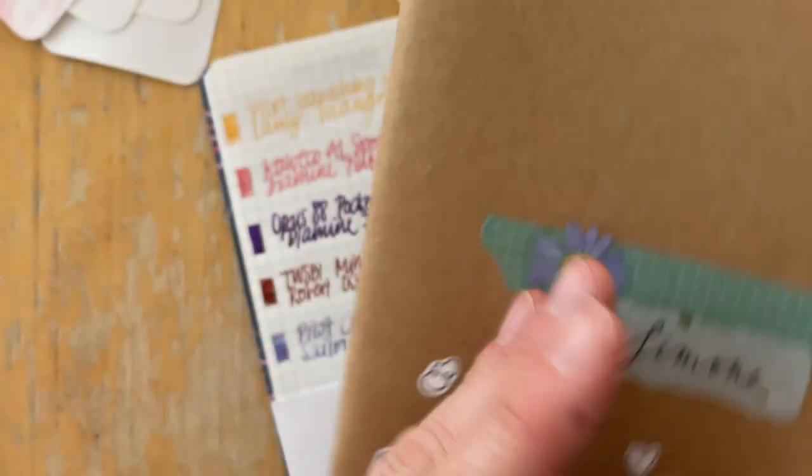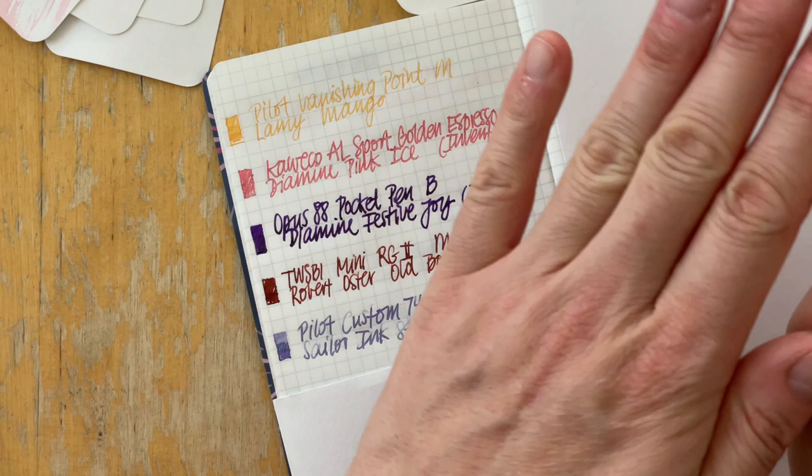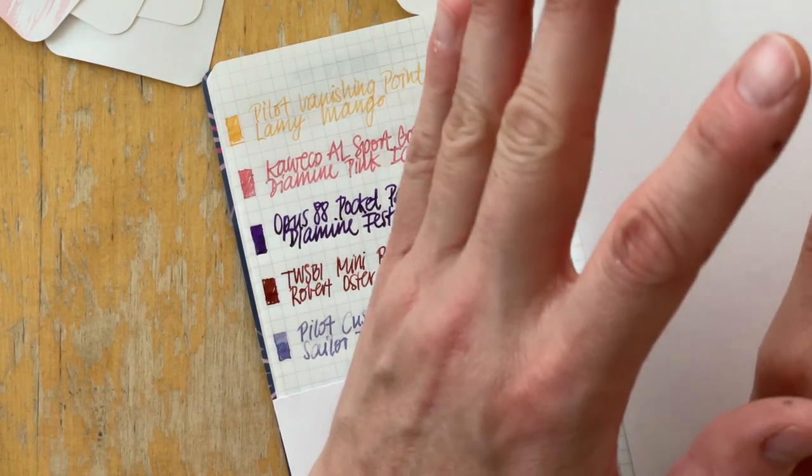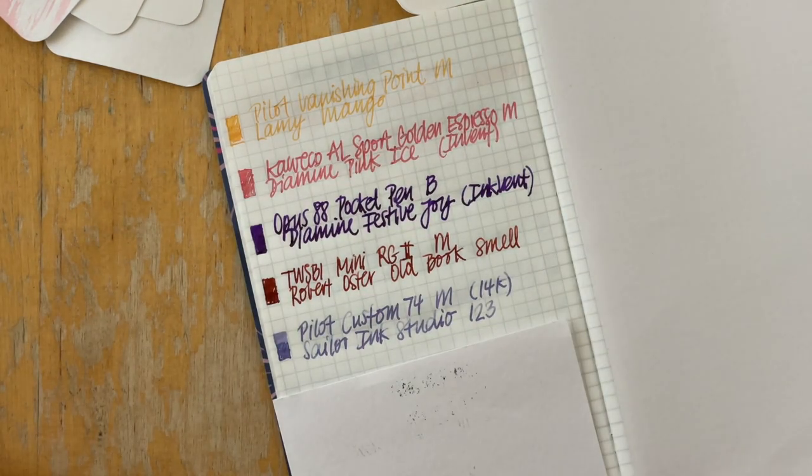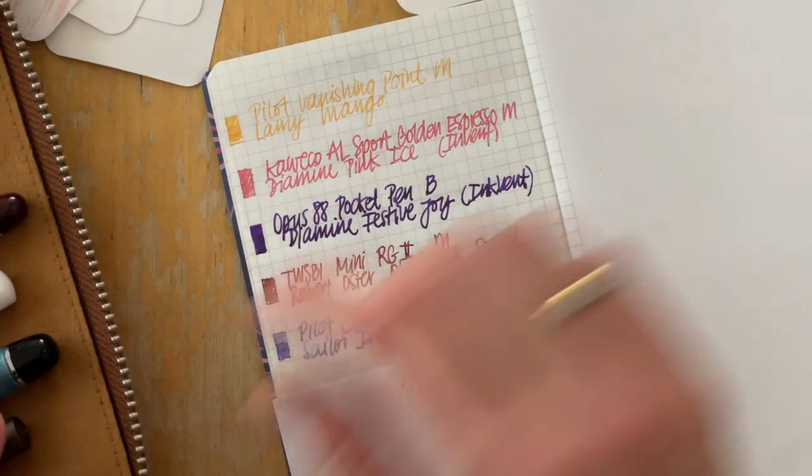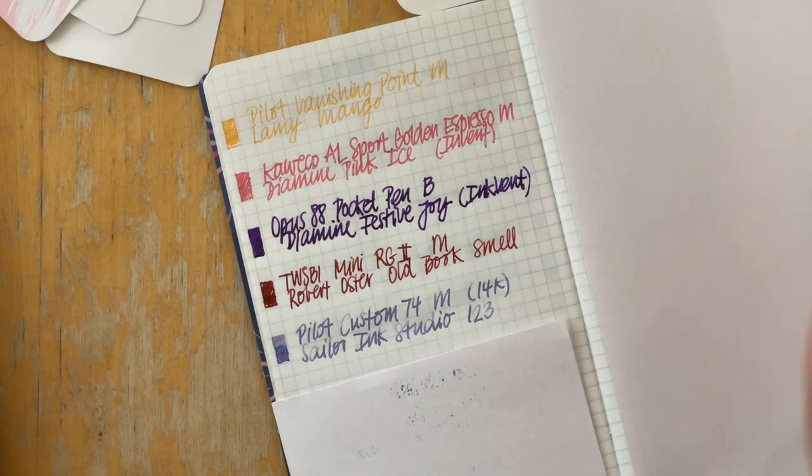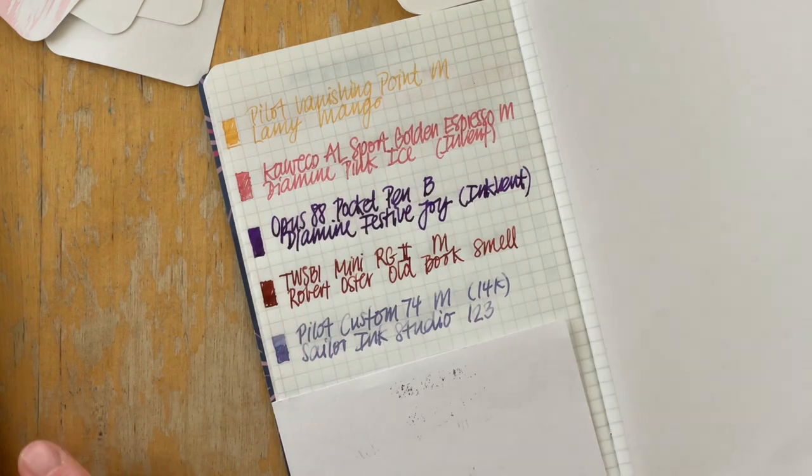I'm past the halfway mark and I definitely want to go back to a Tomoe River paper insert. So I'm really looking forward to this and I have been journaling almost every day. First to empty out my pens right over here. And then now I'm writing every day so that this journal finishes faster.